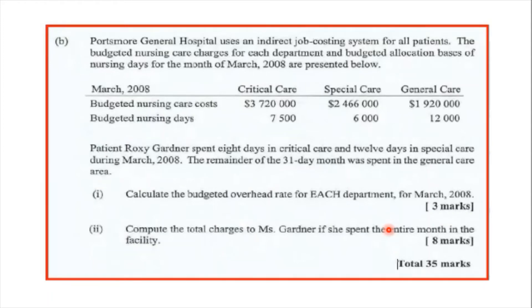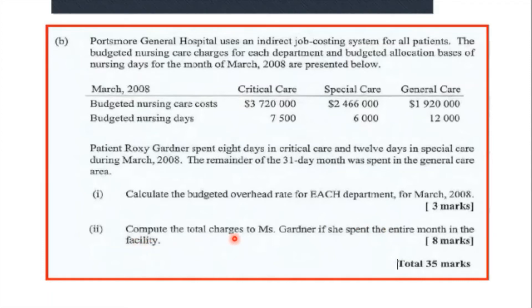Part B is dealing with service costs. It asks us to calculate the budgeted overhead rate for each department for March 2008, and then compute the total charges to Ms. Gardner if she spent the entire month in the facility. We have a general hospital using an indirect cost job costing system for all patients, with three departments: critical care, special care, and general care. The overhead costs for March 2008 are presented.